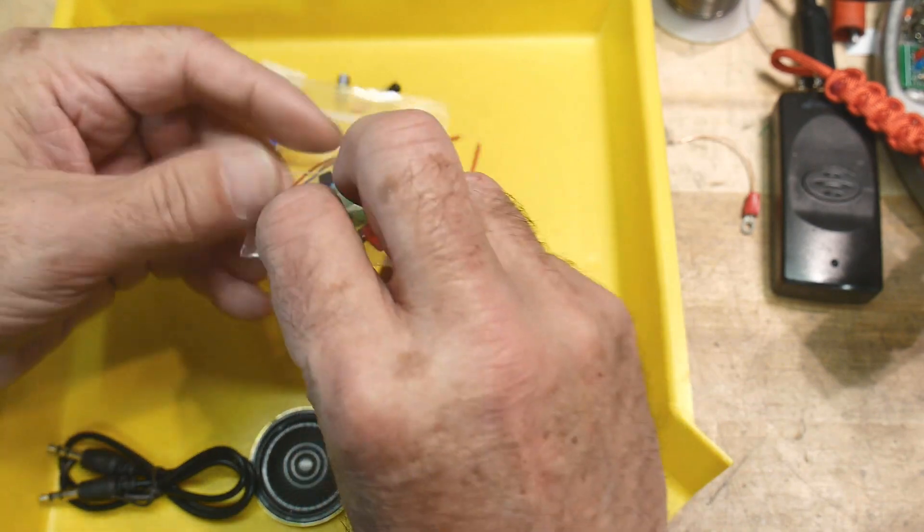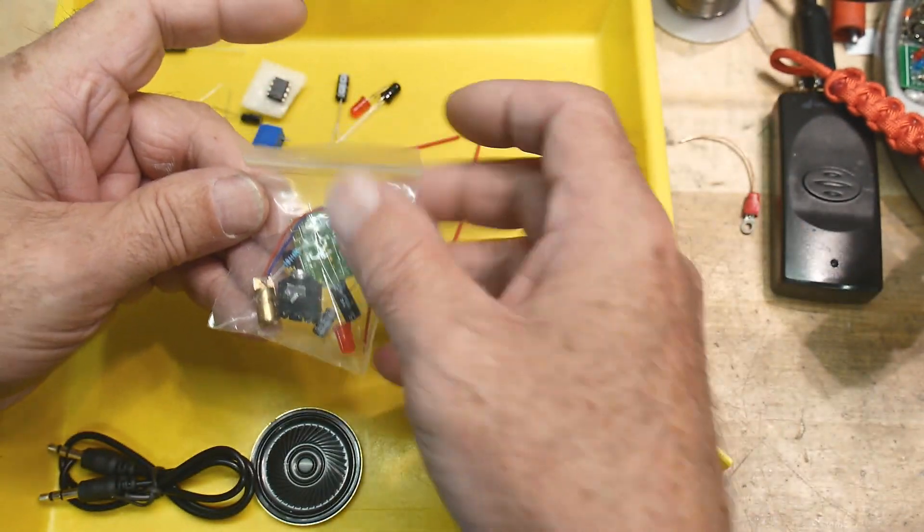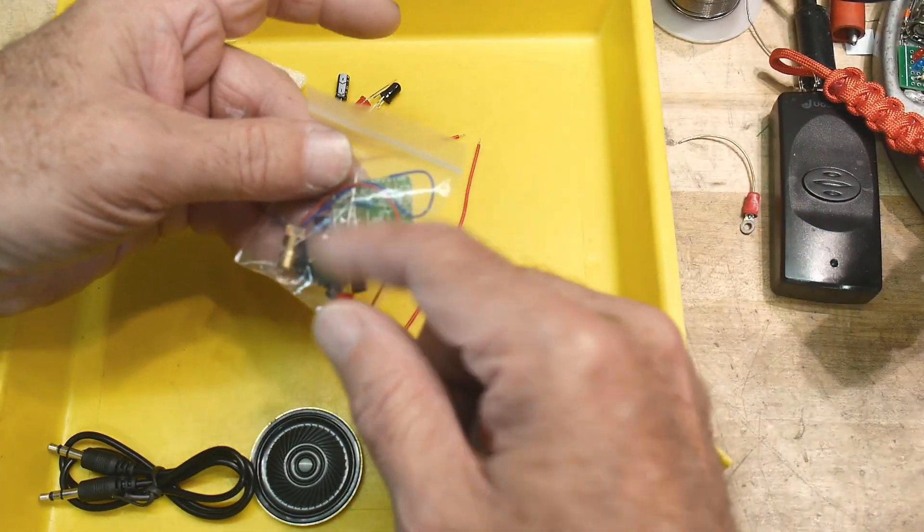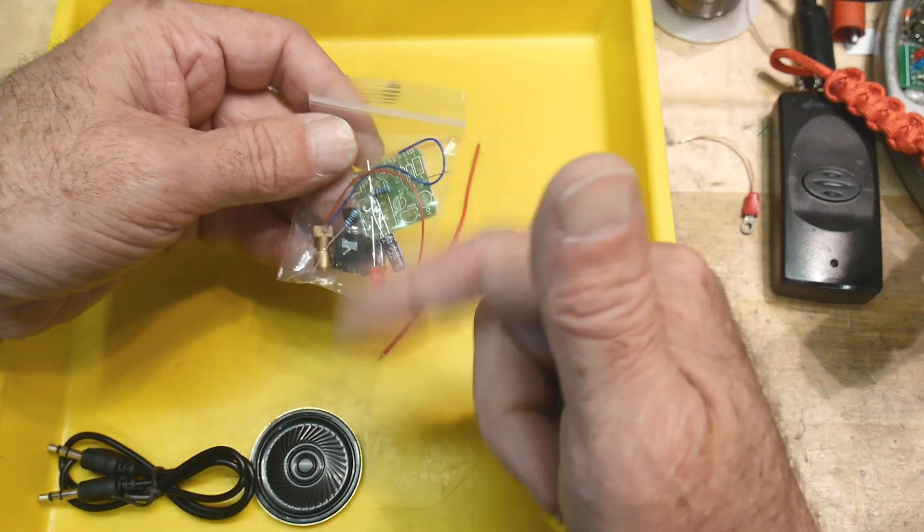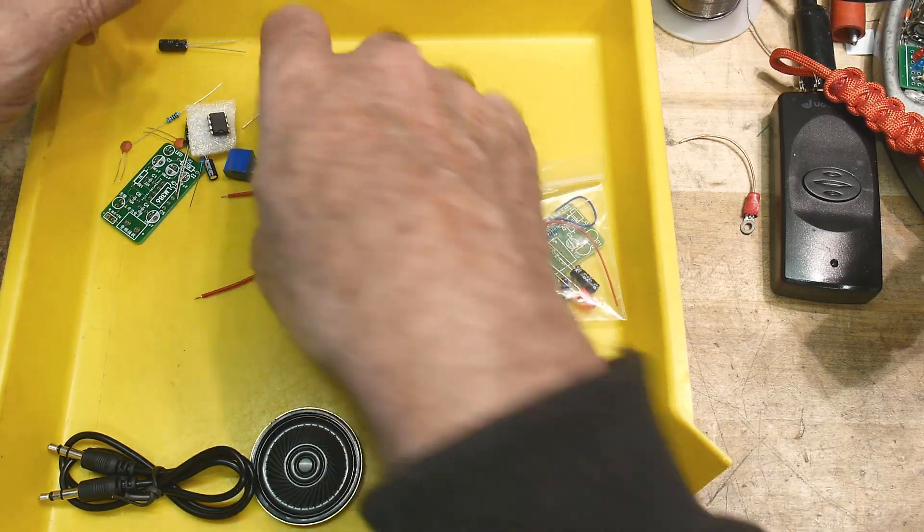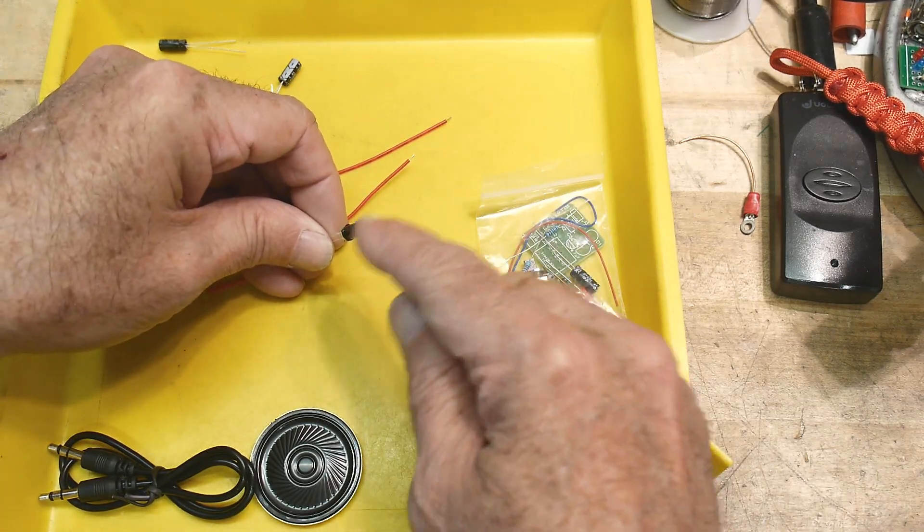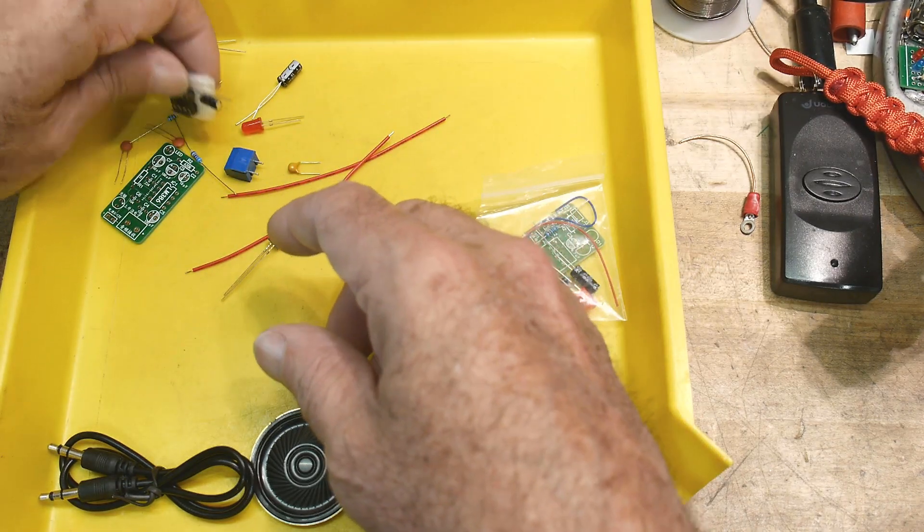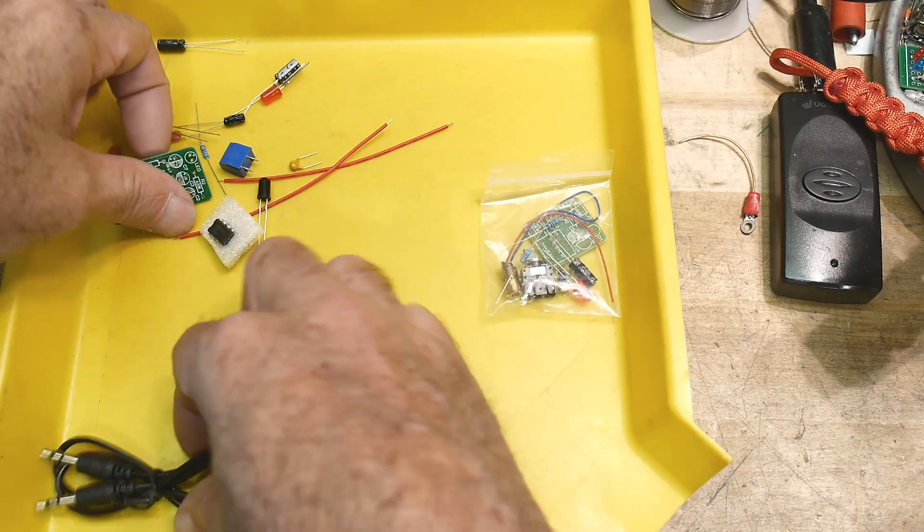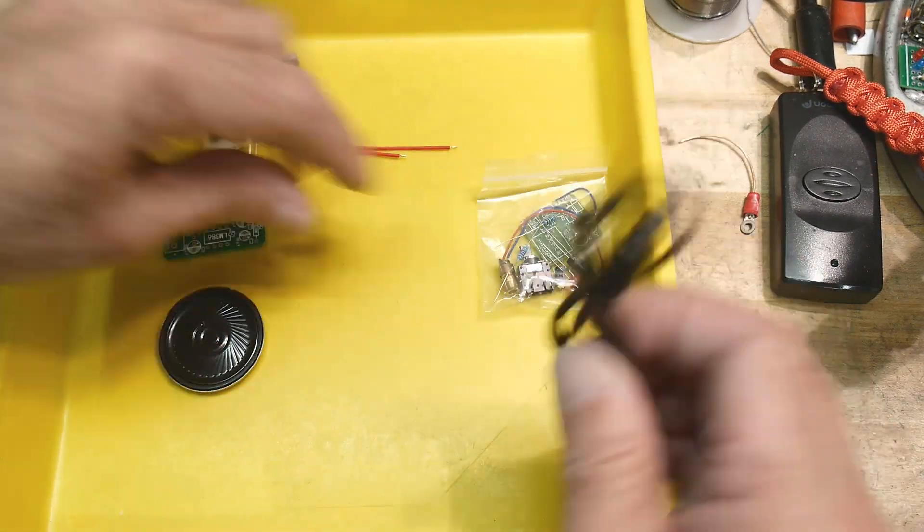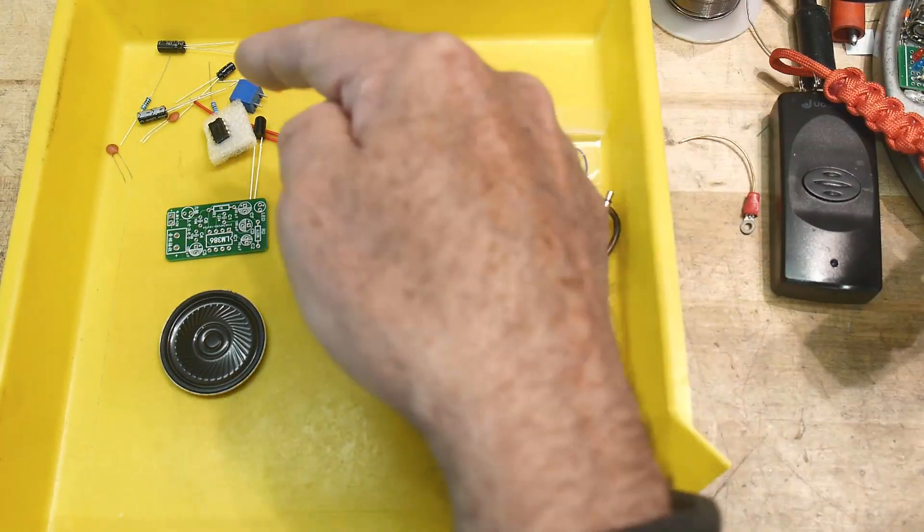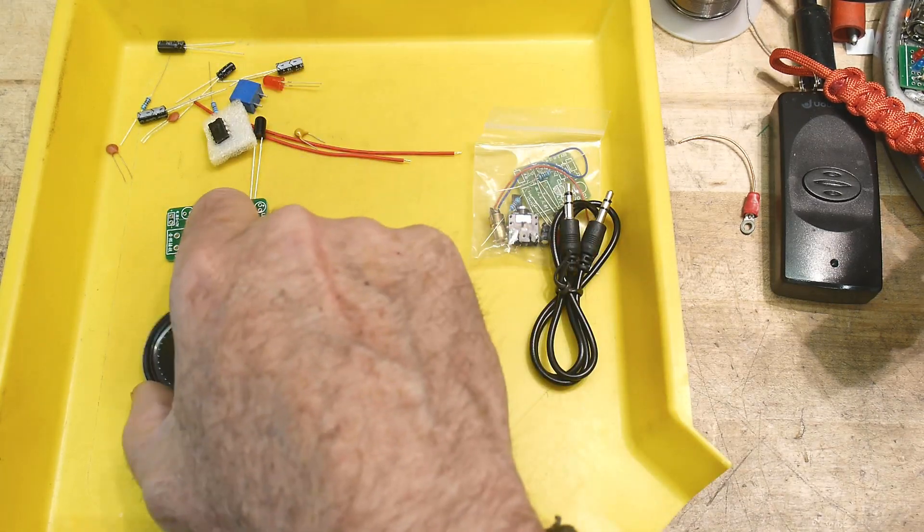It has a laser. This will - you'll hook this up to an mp3 player or something and it will modulate the laser. And then this is the receiver. This is a photodiode, so it will receive this modulation and demodulate it. And then there's an amplifier that will go to a speaker.